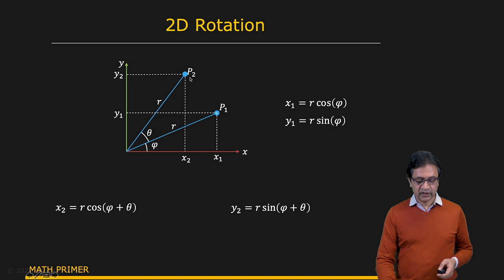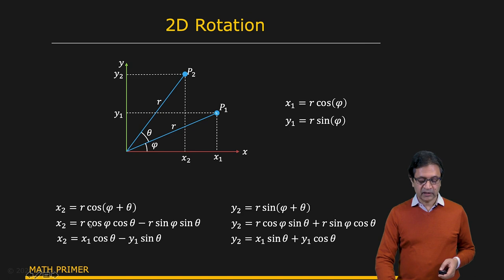And we can say that X2 is equal to R cosine psi plus theta. Y2 is equal to R sine psi plus theta. And you can expand these two, the cosine psi plus theta and sine psi plus theta, to get these expressions right here for X2 and Y2. And you see that you can substitute X1 and Y1 in here to get these two expressions at the bottom where you have X2 equal to X1 cosine theta minus Y1 sine theta. And Y2 is equal to X1 sine theta plus Y1 cosine theta.